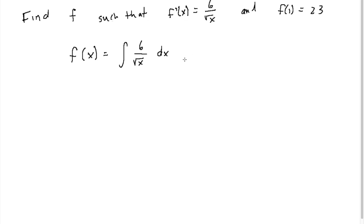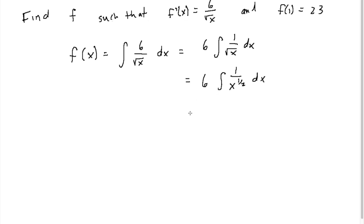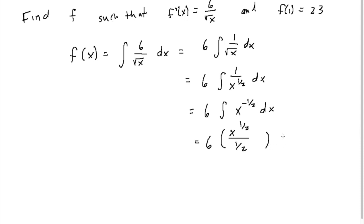This problem requires rewriting a couple times. We have 6 times the integral of 1 over square root of x dx. We rewrite that as 6 times the integral of 1 over x to the 1/2 power dx, then as 6 times x to the negative 1/2 power dx. Taking the antiderivative using the reverse power rule gives 6 times x to the 1/2 over 1/2, which is 12 times x to the 1/2 power plus C.